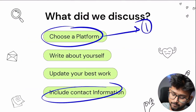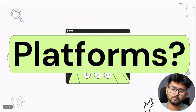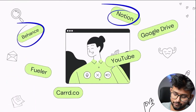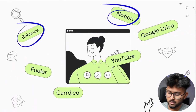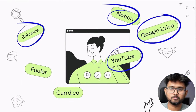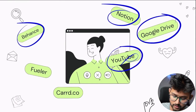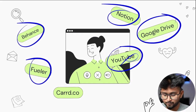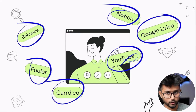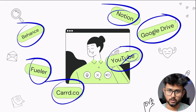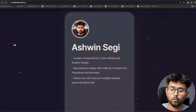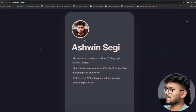So what are the platforms available? First we have Behance, we have Notion, we have Google Drive — which is the worst of all — you have YouTube which is also worse, you have Fueler which is good, and we have card.io which is also good.